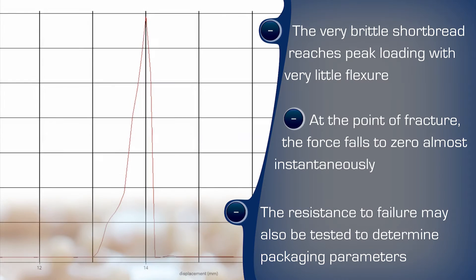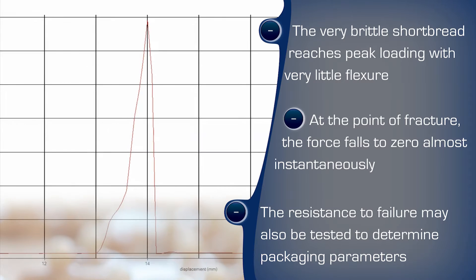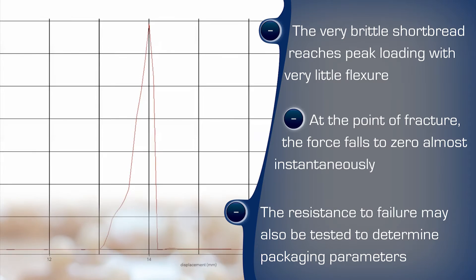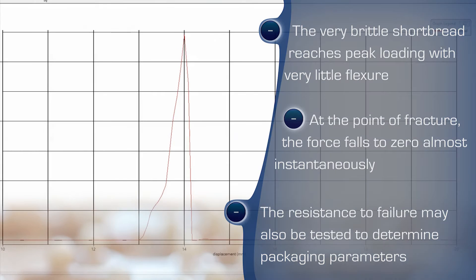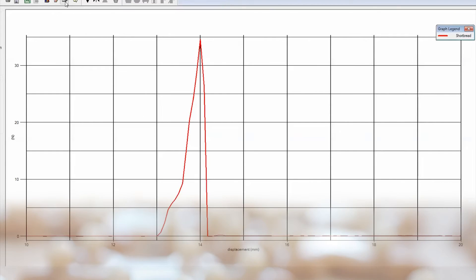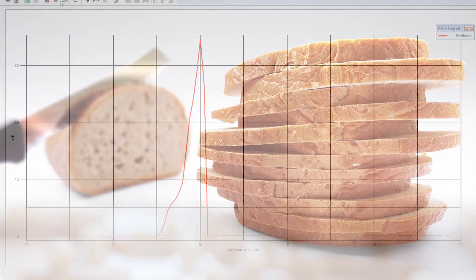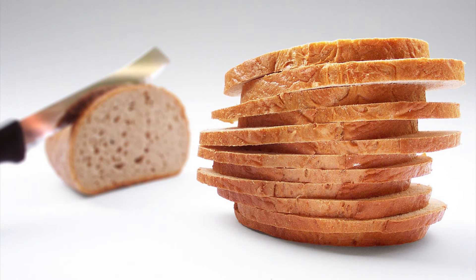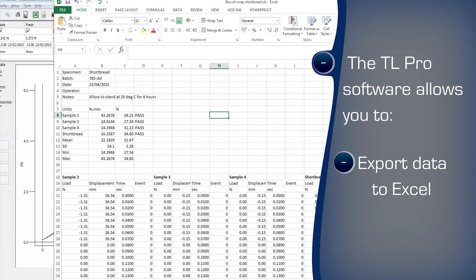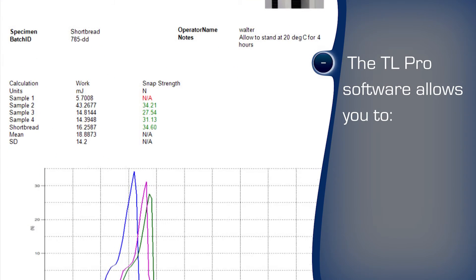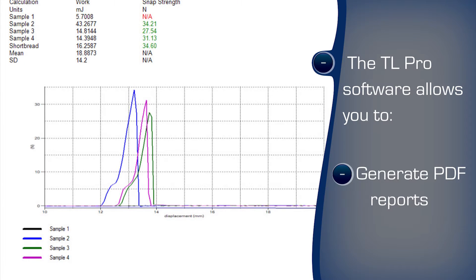For a brittle friable bakery product we would expect a steep rise in compressive force over a very small displacement, followed by a rapid fall off as the sample undergoes a single massive failure. Stale products would undergo some level of flexure and potentially a less instantaneous break. The reversed characteristics would be valuable for products which are desired to exhibit a limited, controlled amount of flexure and which conversely snap when stale. The TL software can export to Excel for further examination and traceability and format the results in a user-customizable report style.